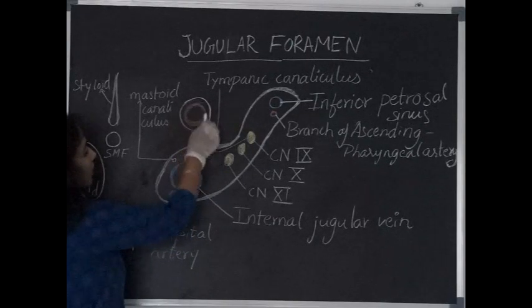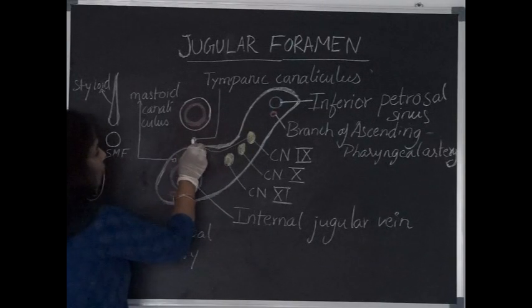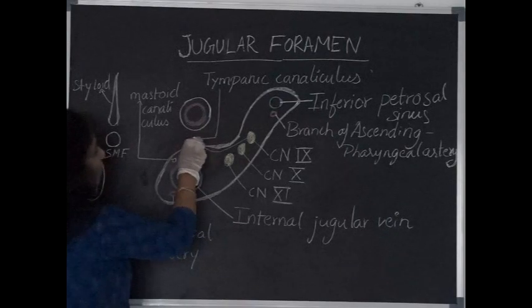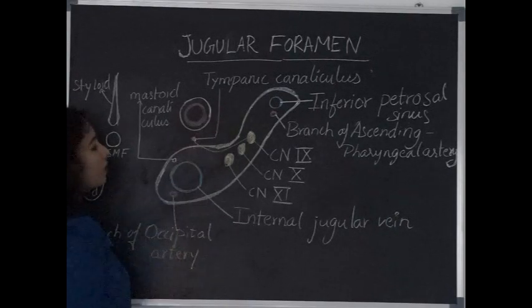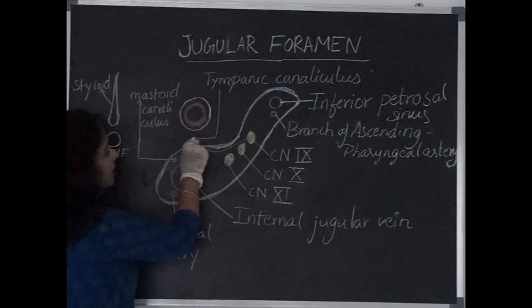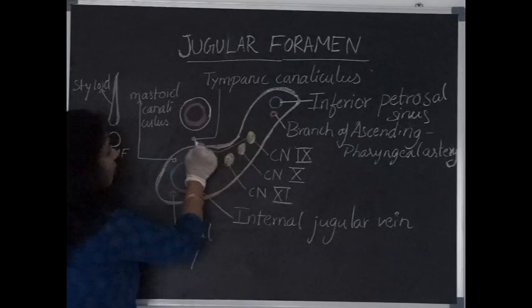And there is a small bar of bone separating the jugular foramen from the carotid canal and there is a foramen opening over the small part of bone which is called as tympanic canaliculus. Tympanic canaliculus is a foramen which is from the jugular foramen, it is opening into the internal ear.